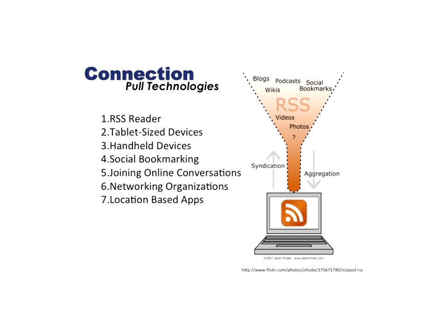We need to look at what technologies we're using to cement those connections and keep information coming to us. RSS technology allows us to syndicate our own material and aggregate other people's content — we pull information to us and push our material out there. We have a number of ways to do that now, including RSS readers, social bookmarking, and networking organisations. Think about how you're getting your hands on the good stuff — the information you need to know without wasting time going out and searching for it.